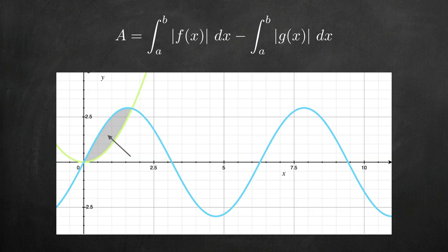Which means, in order to solve an area between curves problem, all you need to do is find the points of intersection of your two curves, which will become the limits of integration, identify which function is higher and which one is lower, and then plug all the pieces into the formula.